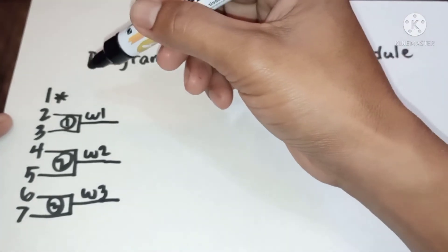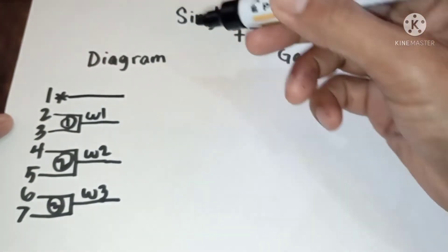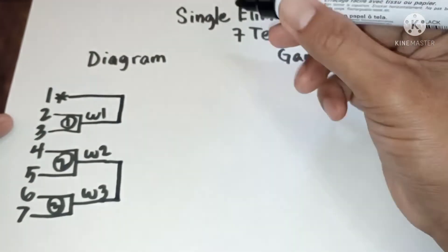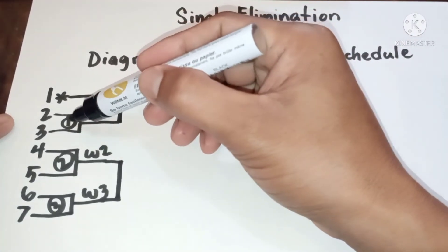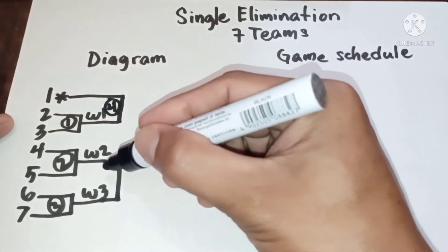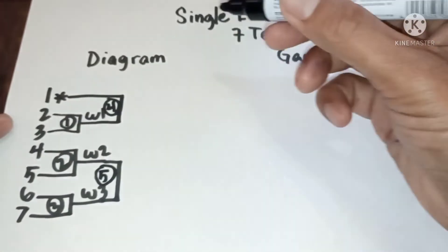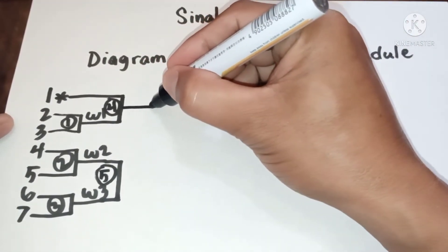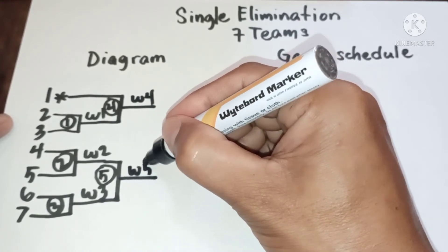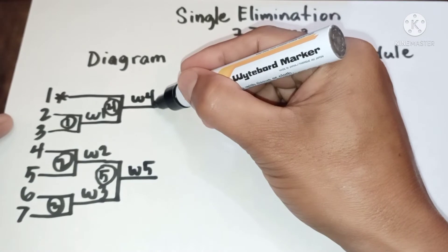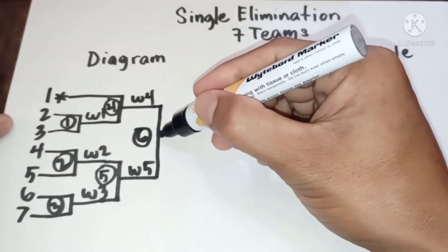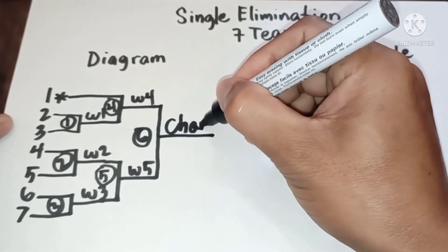Now let's play in the second round. From the top again, the game numbers are game one, game two, game three, and then game four and game five. The results from the top are winner four and winner five. This will be the last game, game six, and the result is champion.